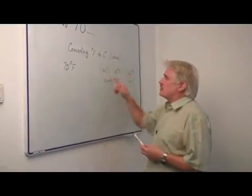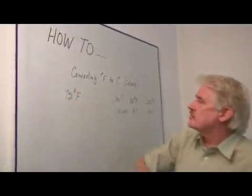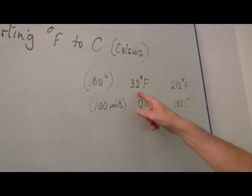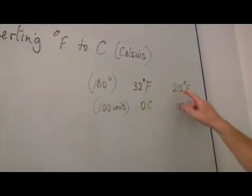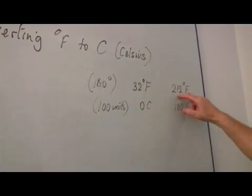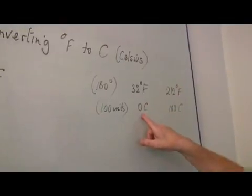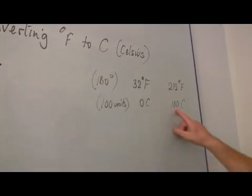So initially we've got a temperature 72 degrees Fahrenheit. We know on the Fahrenheit scale that 32 degrees Fahrenheit is the ice point, that is the freezing point of water, and 212 degrees Fahrenheit is the boiling point of water. The equivalents in Celsius are 0 Celsius and 100 Celsius.